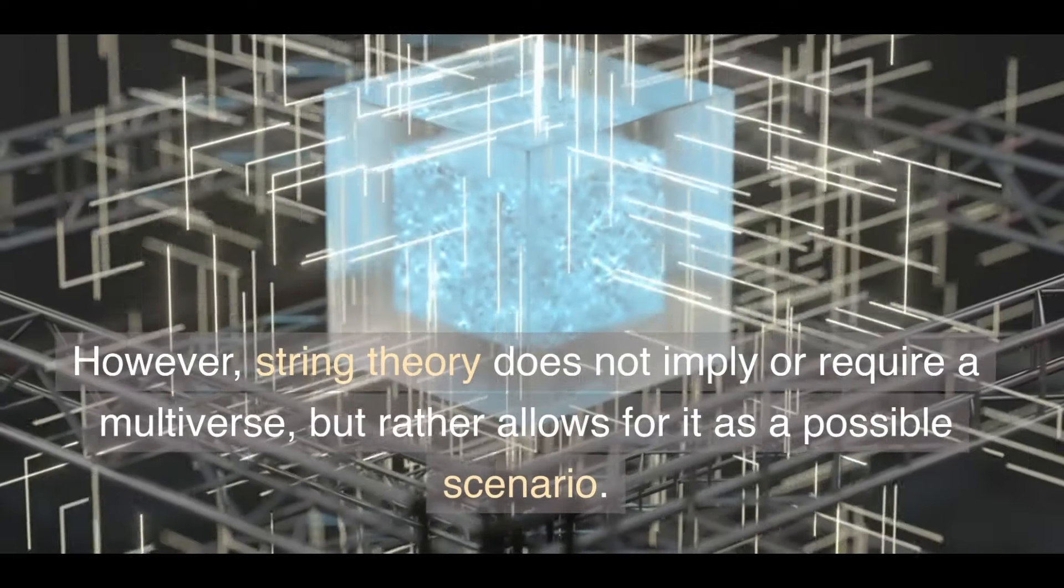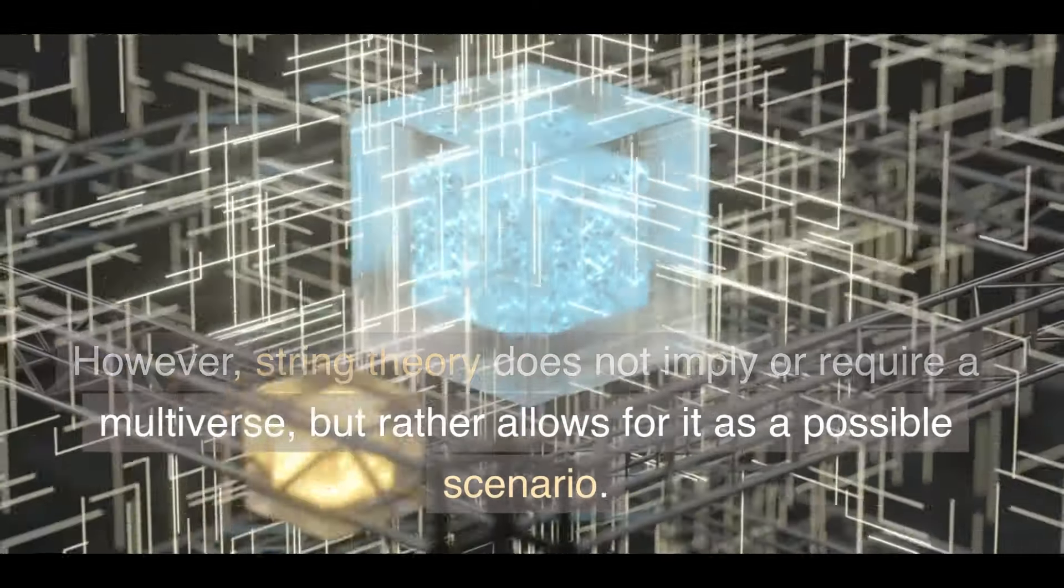However, string theory does not imply or require a multiverse, but rather allows for it as a possible scenario. The multiverse is not a prediction or a consequence of string theory, but rather a hypothesis or a speculation that tries to explain the apparent fine-tuning and diversity of the string landscape. It is not clear if the multiverse is testable or falsifiable, or if it belongs to the realm of science or philosophy. Moreover, there may be other ways to solve the vacuum selection problem without resorting to the multiverse, such as finding some dynamical mechanism or principle that singles out a unique or special vacuum. Therefore, string theory does not imply a multiverse, but rather challenges us to find new ways to understand and test it.